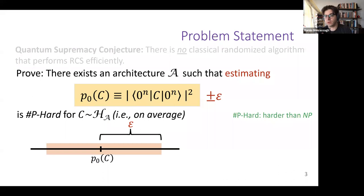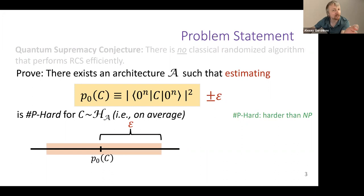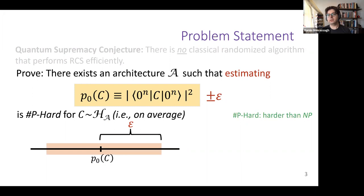Normally one would think a single amplitude being hard is sufficient only for exact sampling. But in this case, because it's a random circuit, it's actually enough for approximate sampling. The actual argument goes: if sampling were easy, you could compute this to plus or minus epsilon. If you can prove this cannot be done efficiently for any classical algorithm, even approximately, then sampling must be hard.